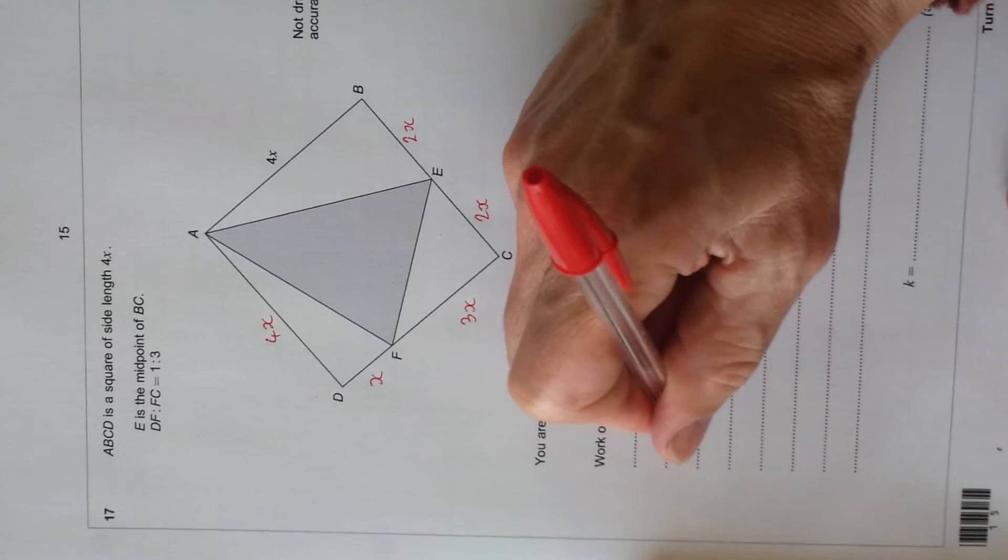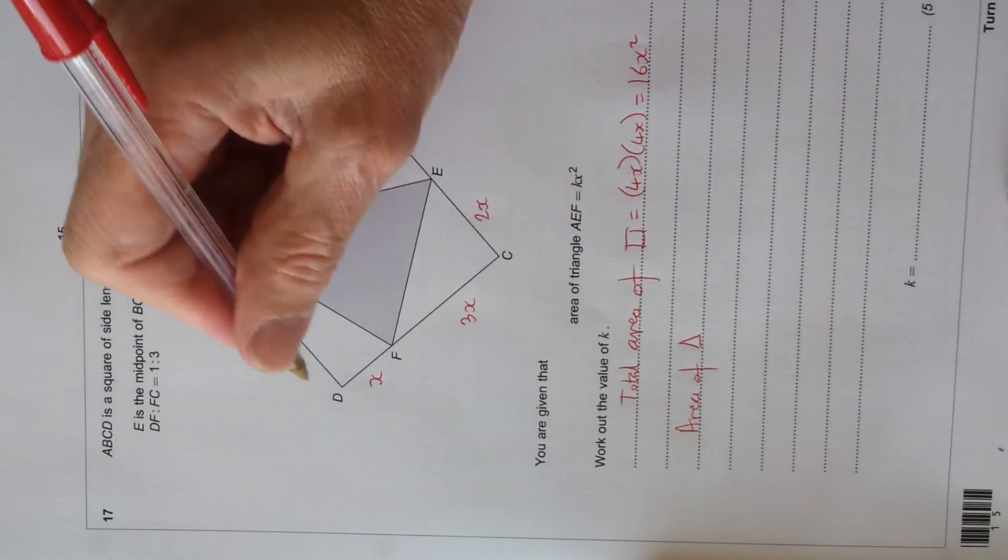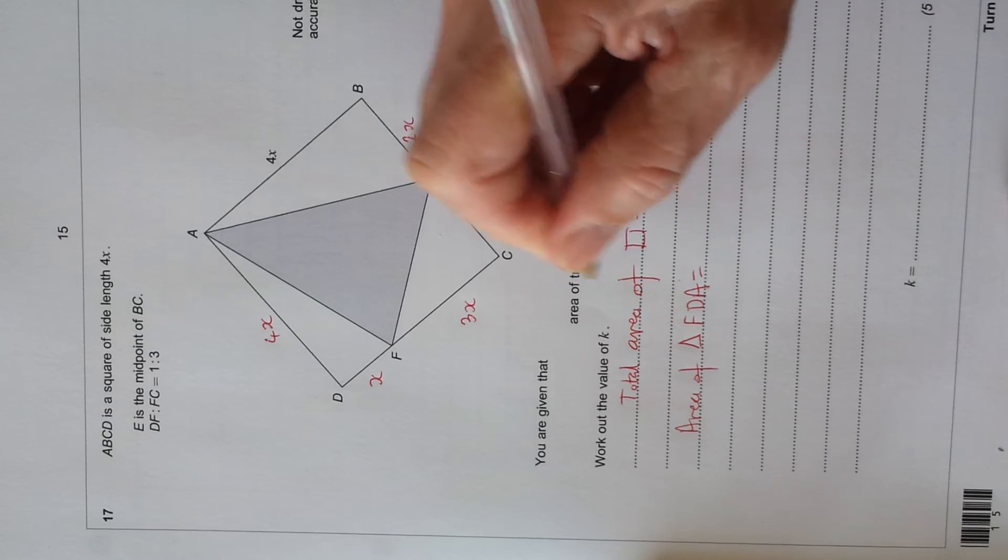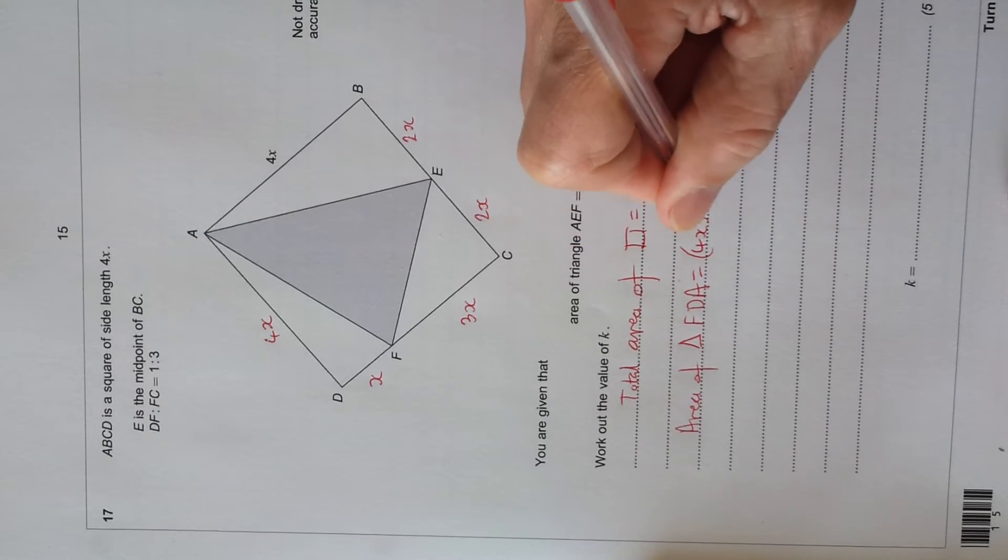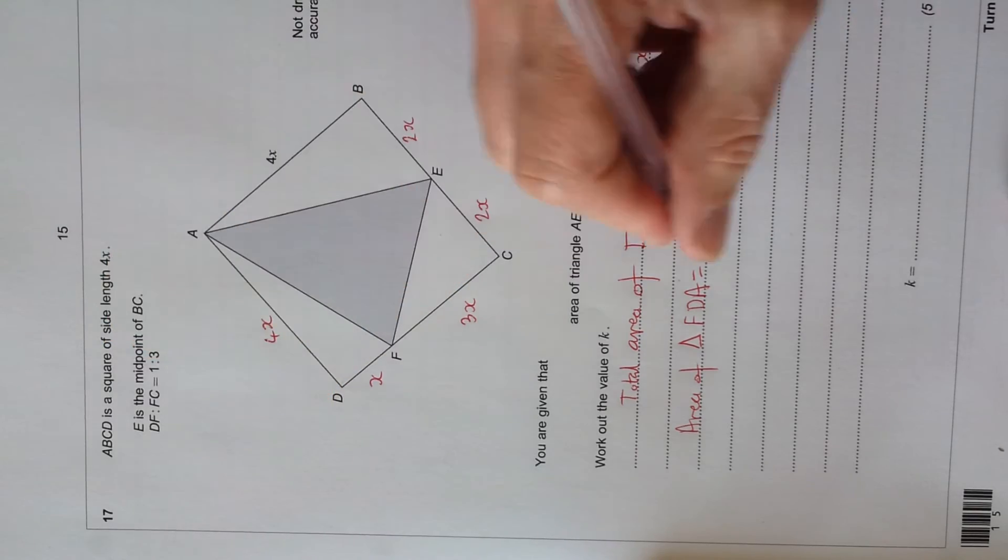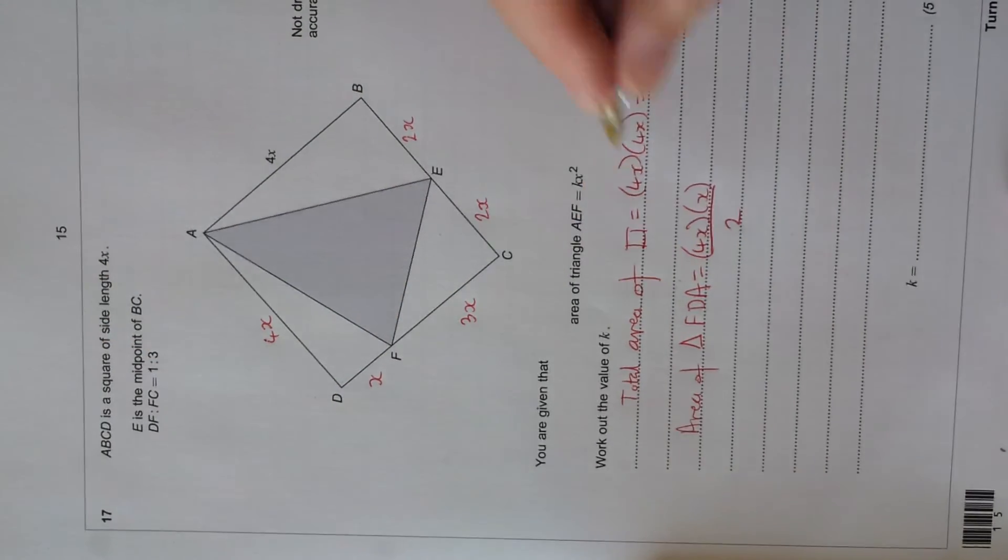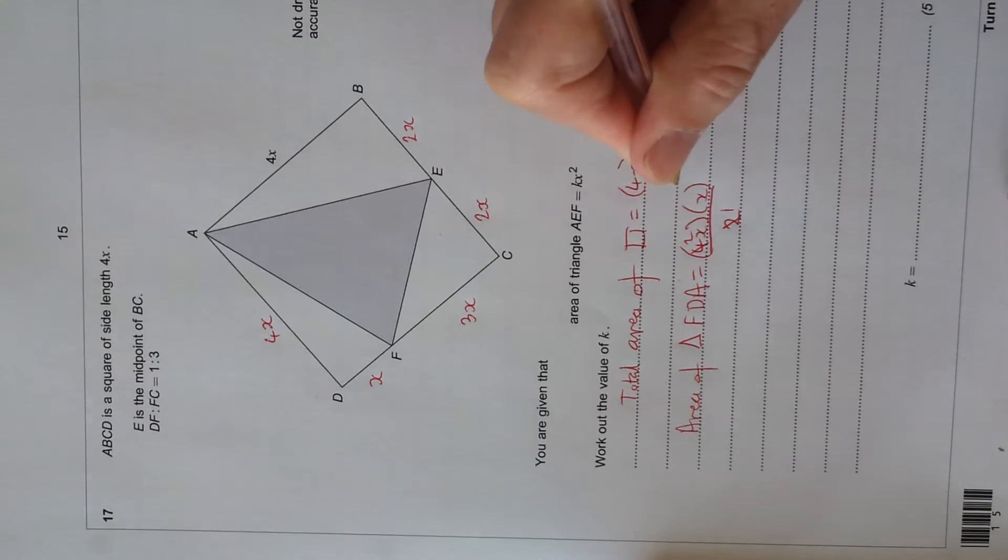And now let's do each triangle. Area of triangle FDA equals 4x times x here, divided by 2, or divide by 2 for the area of the triangle. Let's cancel the 2 and the 4. 2 goes into 2 once, and the 4 twice, so we've got 2x squared.